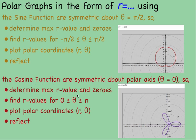With the cosine function, this is symmetric about the polar axis, which is theta equals 0. So I am only concerned with graphing points from 0 to pi, so I would be graphing those points and then reflect over the polar axis.